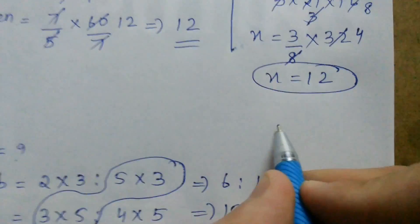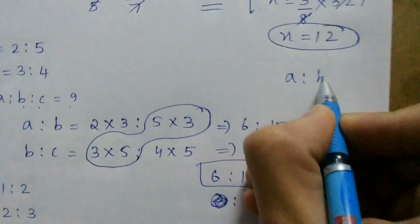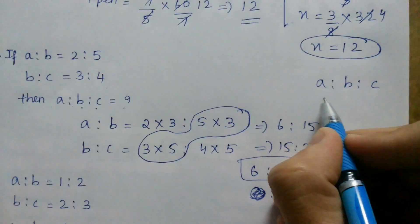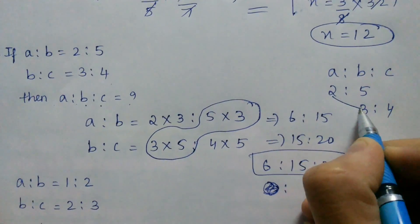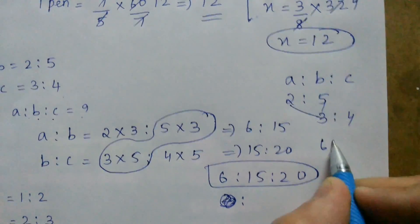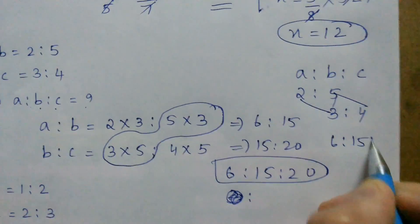Simply shortcut method, that is what is A is to B is to C. Take A is to B is to C. A is to B is 2 is to 5 and B is to C is 3 is to 4. Just multiply these. 2, 3 is to 6. 5, 3 is to 15 and 5, 4 is to 20.